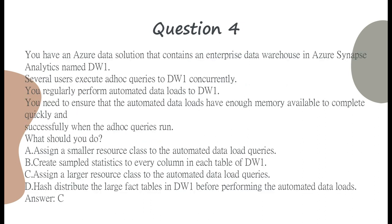Question 4. You have an Azure data solution that contains an enterprise data warehouse in Azure Synapse Analytics named db1. Several users execute ad hoc queries to db1 concurrently. You regularly perform automated data loads to db1. You need to ensure that the automated data loads have enough memory available to complete quickly and successfully when the ad hoc queries run. What should you do? A. Assign a smaller resource class to the automated data load queries. B. Create sampled statistics for every column in each table of db1. C. Assign a larger resource class to the automated data load queries. D. Hash distribute the large fact tables in db1 before performing the automated data loads. Answer: C.